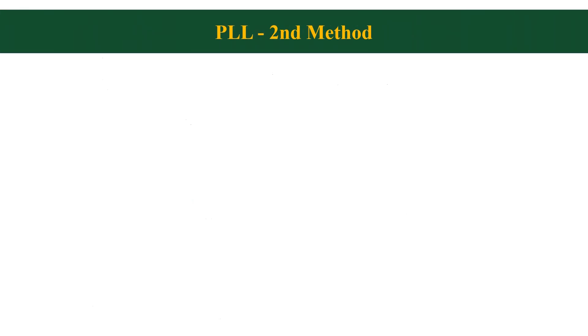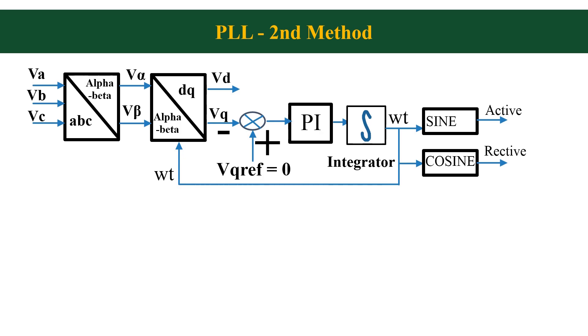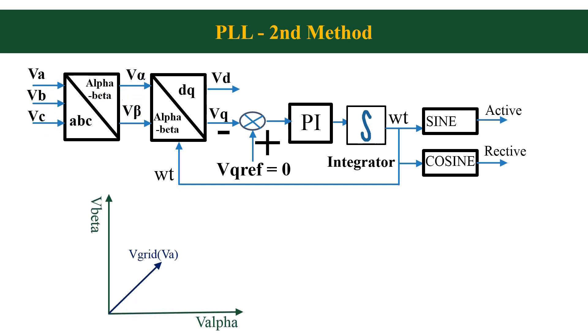We can get rid of all these issues by using a closed loop phase locked loop, that I will explain now. This is the complete block diagram of phase locked loop with closed loop control. Similar to the previous method, here also we start with transforming the ABC signals to alpha-beta signals. Let me also draw the phasor diagram. I have marked alpha, beta, and grid voltage. Now we convert the alpha-beta voltages to DQ voltages.